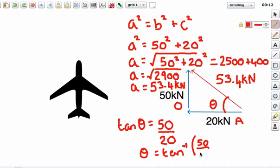And then theta is going to be tan to the minus 1 of 50 over 20, like so. And when I put that in my calculator, so tan to the minus 1 of 50 divided by 20, we get 68.2 degrees.